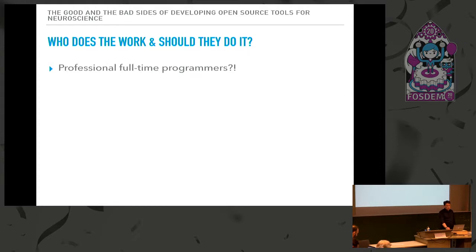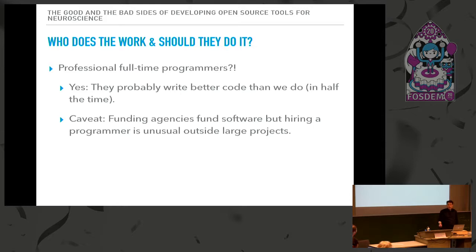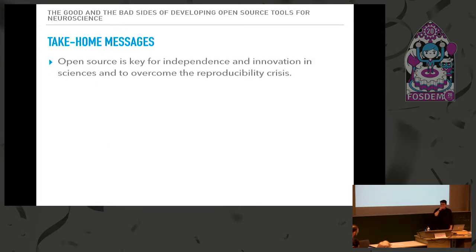So professional full-time programmers — they probably write code much better and much faster. The caveat is that funding agencies fund for software: they're happy to give you money for buying specific software, but usually they don't give you money to hire a programmer. We would love to have long-term maintainers involved in open source, and I think it would be really great if there were software workshops in institutions.